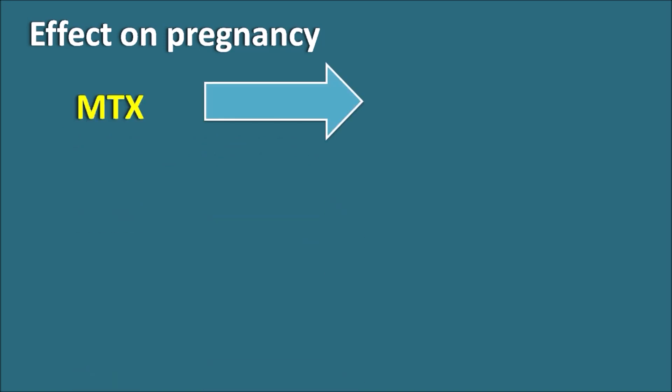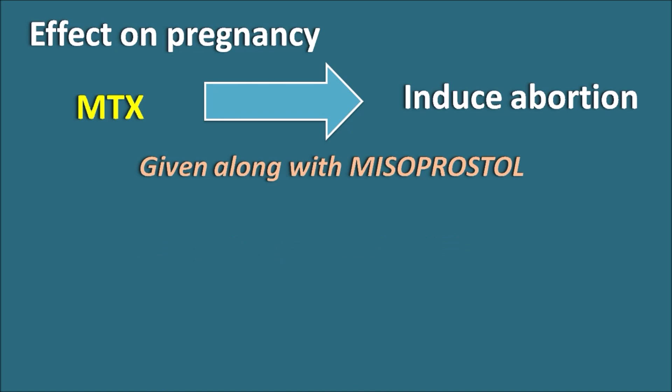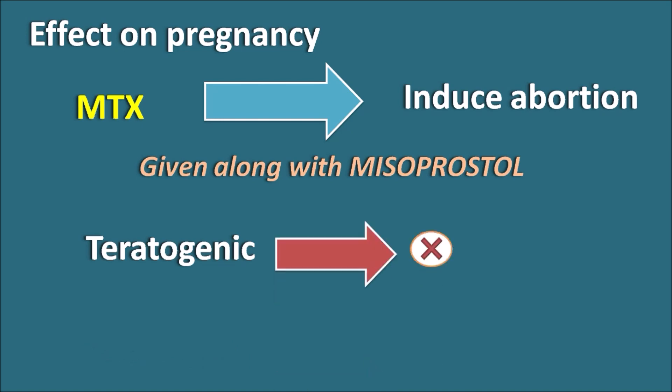Regarding the effect of methotrexate on pregnancy: methotrexate can induce abortion and is generally given with misoprostol, a prostaglandin analog. The methotrexate plus misoprostol combination can be used for medical termination of pregnancy and in cases of ectopic pregnancy. However, methotrexate is teratogenic when given to pregnant women and is therefore contraindicated in pregnancy.